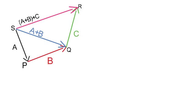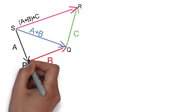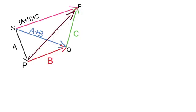Now look at the points P, Q, R — they also constitute a triangle PQR. In this triangle, the side PR will be the vector sum of PQ and QR. Therefore, PR becomes equal to vector b plus vector c. Now looking at triangle S, P, R — in this triangle, the side SR will be equal to vector SP plus vector PR, which is equal to vector a plus (vector b plus vector c). Thus, the same side SR represents (vector a plus vector b) plus vector c, which is equal to vector a plus (vector b plus vector c), proving associativity.